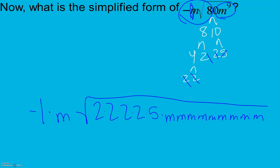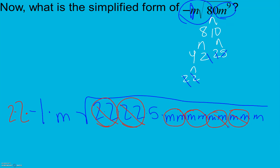Now I look for pairs. I have a pair of 2s that comes out as a 2, and another pair of 2s that comes out as a 2. I also have four pairs of m's. When I simplify, my number parts: 2 times 2 times negative 1 gives me negative 4. And multiplying my m's from the pairs, I have 1, 2, 3, 4, 5 — m to the 5th power.